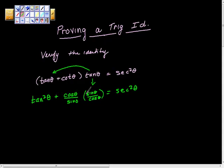And this times this is 1, because they cancel here and here. So we have tan squared theta plus 1 equals secant squared theta.